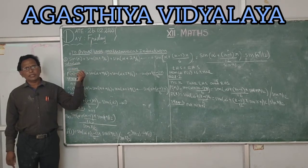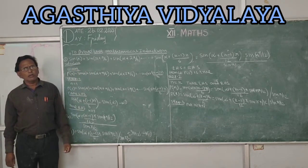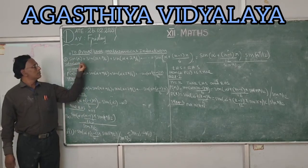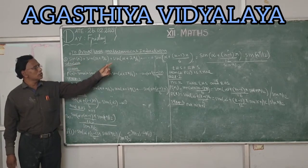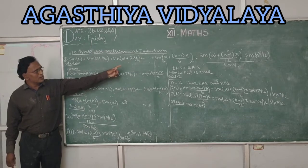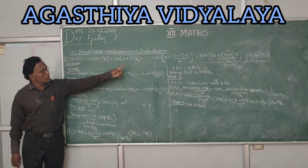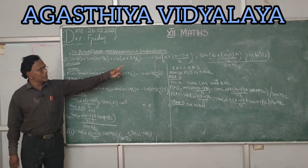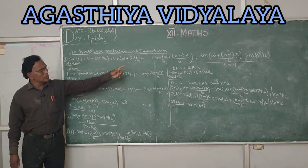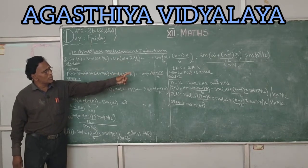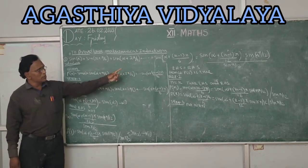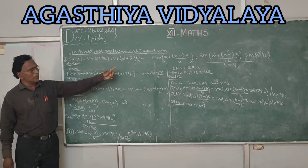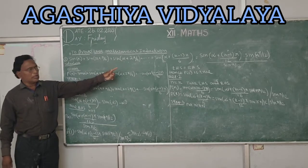Prove by mathematical induction the formula: sin α + sin(α + π/6) + sin(α + 2π/6) + ... + sin(α + (n−1)·π/6) equals sin(α + (n−1)π/12) · sin(nπ/12), whole divided by sin(π/12).